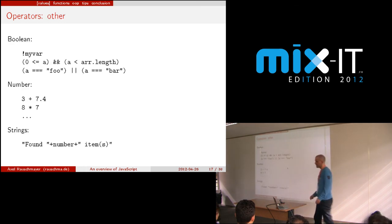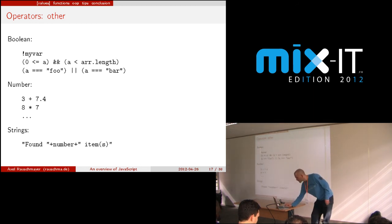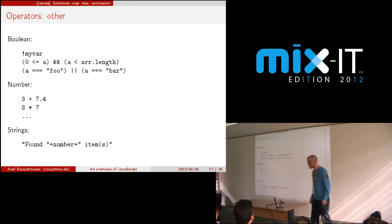There are more operators. You have the typical boolean operators — and and or — which work for any kind of value, and we're going to use those later. Then you have numbers with plus, times and so on — those are the same in almost any programming language. Strings: you add by plus, similar to how Java does it.